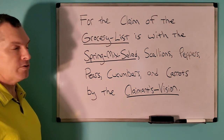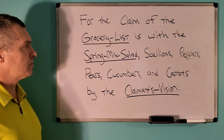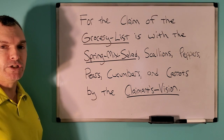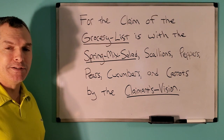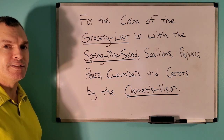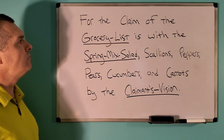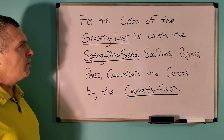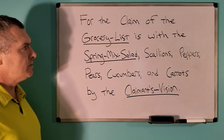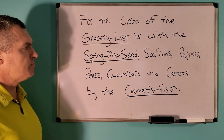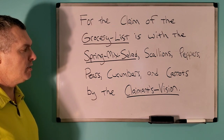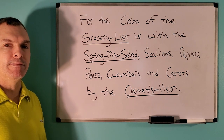This is just a simple correct sentence structure claim. I was thinking about going shopping and getting some ingredients to make a salad for myself. Thus, for the claim of the grocery list is with the spring mix salad, scallions, peppers, pears, cucumbers, and carrots, by the claimant's vision.